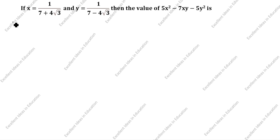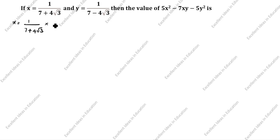What is given in this question? x is equal to 1 divided by 7 plus 4 root 3. You see the denominator is given as plus. So we will rationalize the denominator as 7 minus 4 root 3 divided by 7 minus 4 root 3.